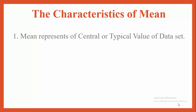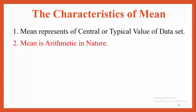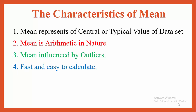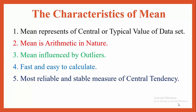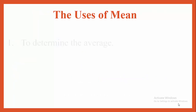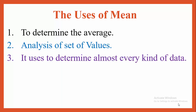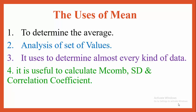Characteristics of mean: mean represents the central or typical value of a data set. Mean is arithmetic in nature. Mean is influenced by outliers. It is fast and easy to calculate. It is the most reliable and stable measure of central tendency. Mean is the gravitational mean of a series. Uses of mean: to determine the average analysis of a set of values, to determine almost every kind of data, and it is useful to calculate mean combination, standard deviation, and correlation coefficient.